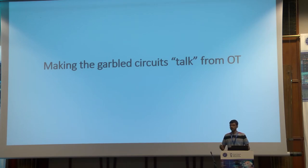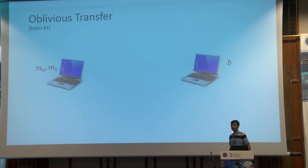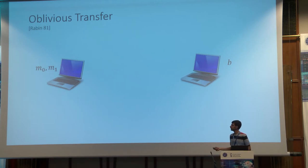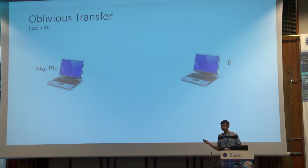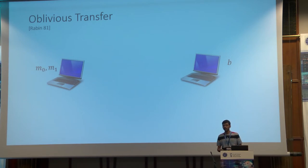Let me first recall oblivious transfer. An oblivious transfer is a protocol between two parties: a sender and a receiver. The sender's inputs are M0 and M1, two strings, and the receiver's input is a choice bit B. At the end of the protocol, the receiver learns the message MB, the sender does not learn anything about bit B, and the receiver does not learn anything about the message M1-minus-B.